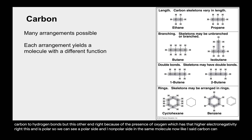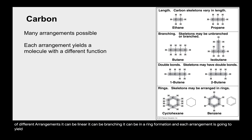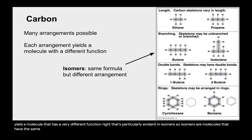Carbon can make a lot of different arrangements — it can be linear, branching, or in a ring formation, and each arrangement yields a molecule with a very different function. This is particularly evident in isomers. Isomers are molecules that have the same formula but are arranged differently.